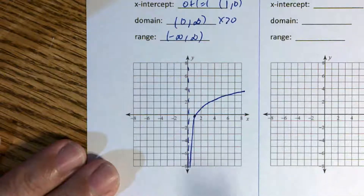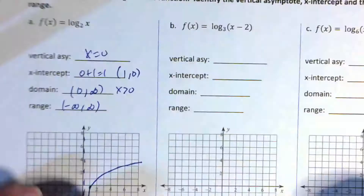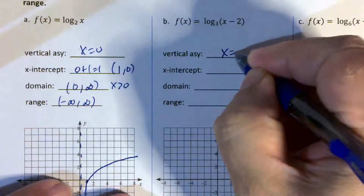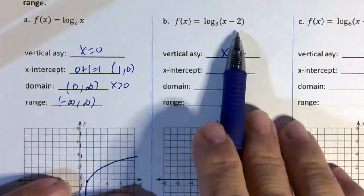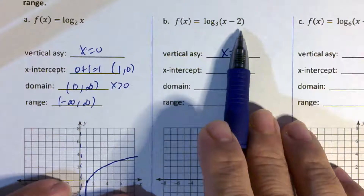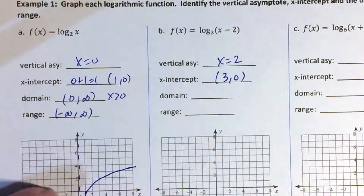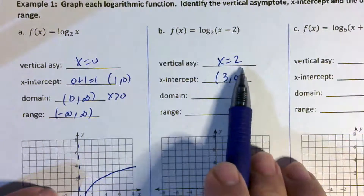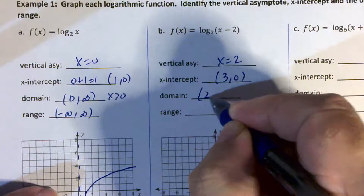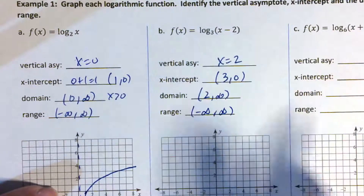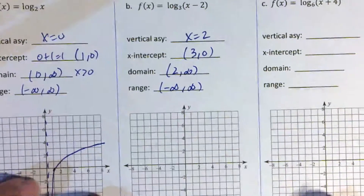It can get more complicated, but we're keeping these simple. Looking at the next one: the vertical asymptote is related to the 2, so the vertical asymptote is x equals 2. The x-intercept is 2 plus 1, so it's (3, 0). The domain is greater than 2, so it's 2 to infinity. The range is all real numbers, negative infinity to positive infinity.